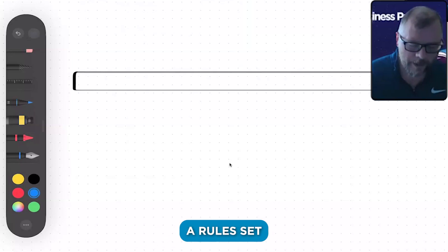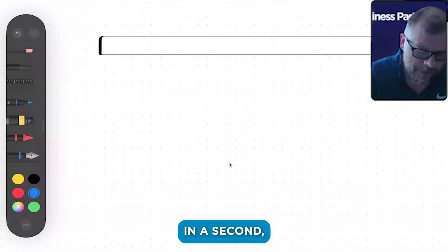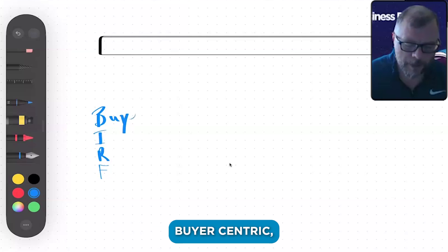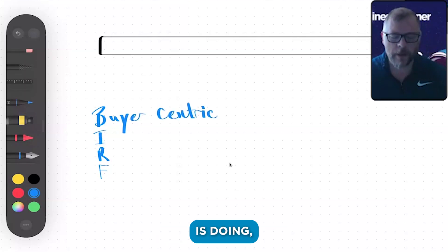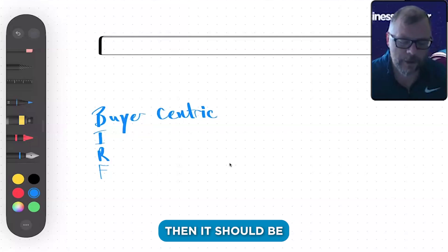There's kind of a rule set for how we name deal stages, and this all makes sense in a second. It's BIRTH with a C on it. This should be buyer-centric, so it should be about what the customer is doing, not what the salesperson or production manager is necessarily doing. Then it should be what the buyer has experienced.